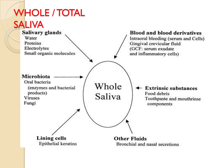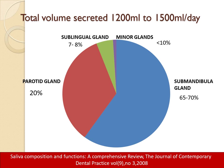Salivary secretion is called whole or total saliva. It is composed of water, proteins, electrolytes and organic molecules from the glands, microbiota (oral bacteria, viruses and fungi), lining epithelial cells, other bronchial and nasal secretions, and extrinsic substances like food debris, toothpaste and mouth rinse components, and blood derivatives. The total volume secreted is 1200 to 1500 ml per day. The parotid gland contributes 20%, sublingual gland 7 to 8%, minor glands less than 10%, and the submandibular gland comprises the major part at 65 to 70%.